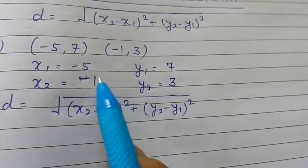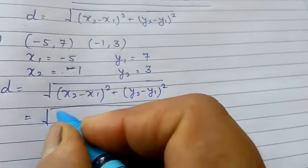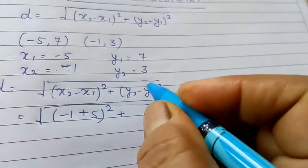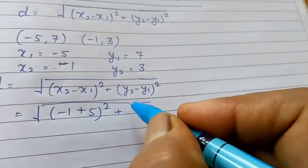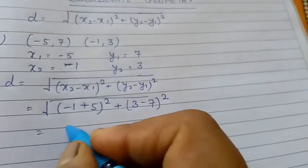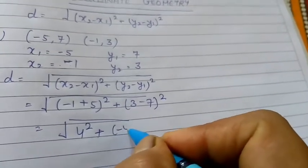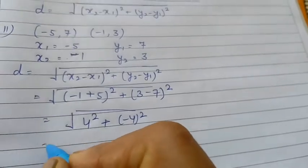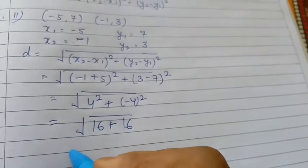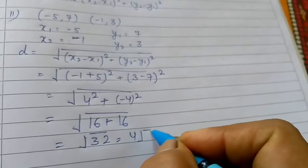Applying the distance formula: (minus 1 minus 5) means plus 5, whole square, and (3 minus 7) whole square. So we get 4 squared plus minus 4 squared. The square of 4 is 16 and the square of minus 4 is also 16, giving us root 32, which equals 4 root 2 units.